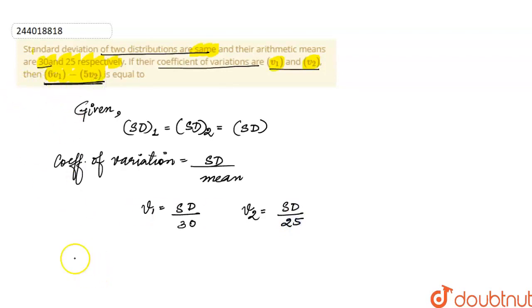Now, 6v1 minus 5v2 equals 6 times standard deviation over 30, minus 5 times standard deviation over 25.